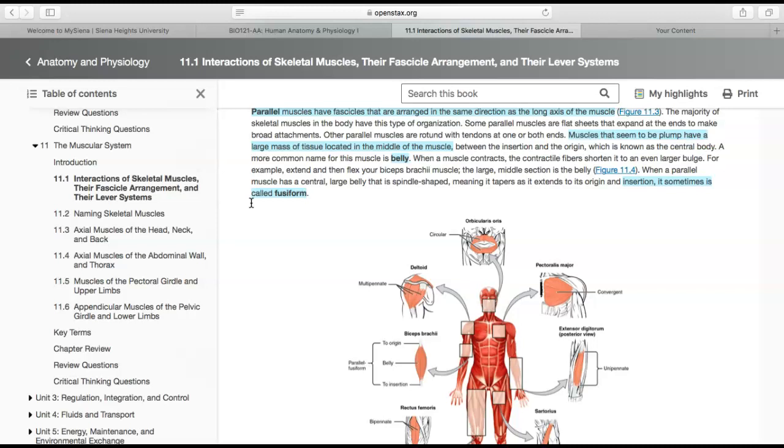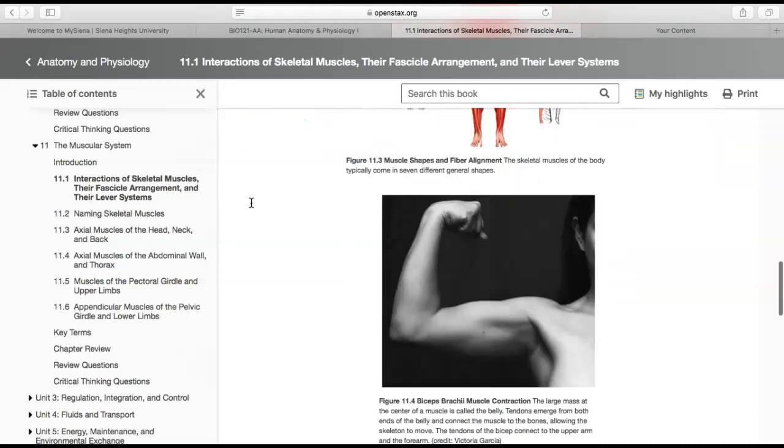When the muscle contracts, the belly seems to get even larger. If you want to know what that is, flex your arm and notice that the middle part of that muscle seems to get larger. We call that the belly. It's the biceps brachii belly right here.